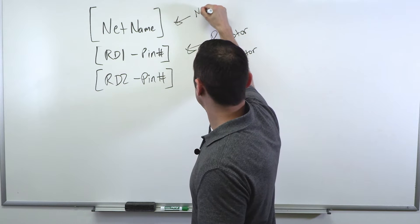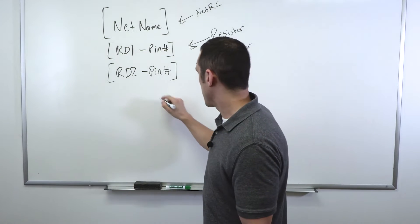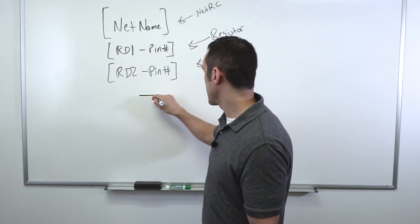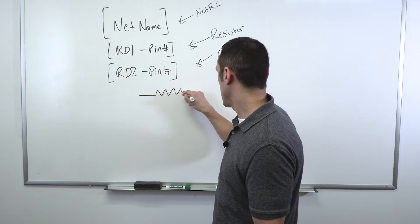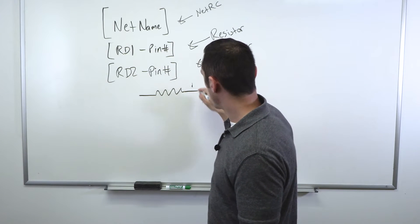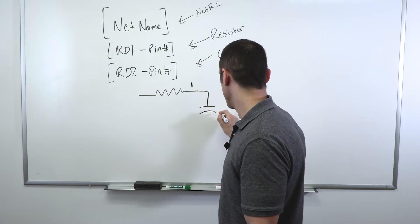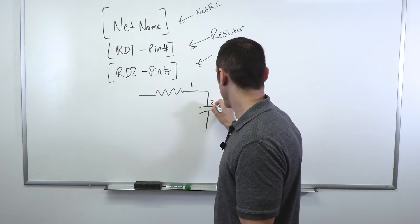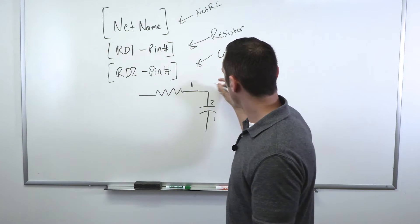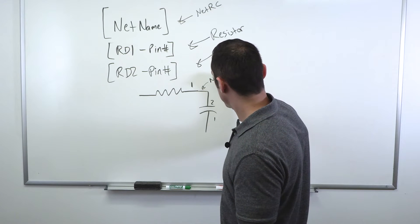So if I were to look in my ECAD software and look at my circuit diagram and my schematics, I'd first have a resistor and we're going to call this pin one. And this may connect to a capacitor and we'll just call this pin two on the capacitor. That means this side is pin one. So this net we've already said is going to be named net RC.